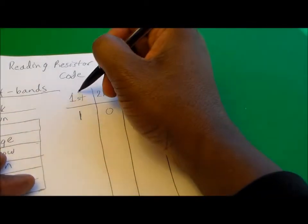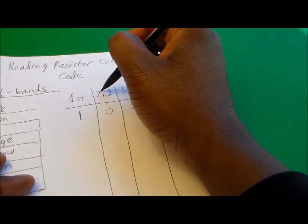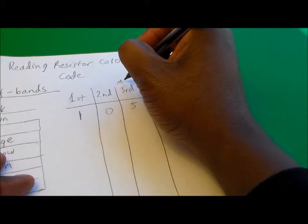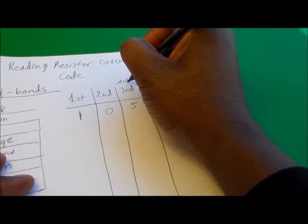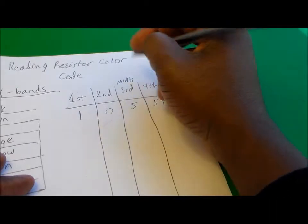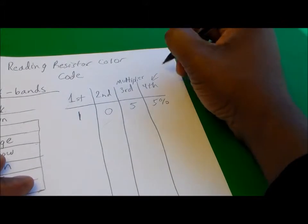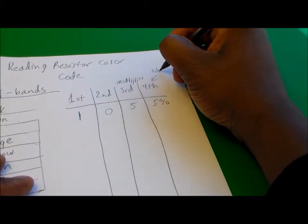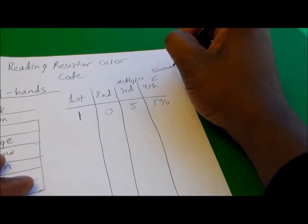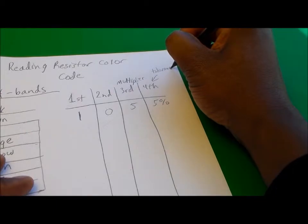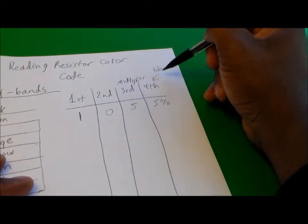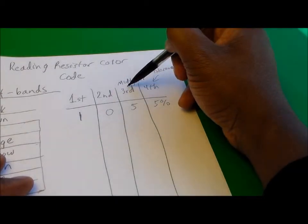Going back, you read the first band as is, the second band as is, the third band is called the multiplier band, and then the fourth band is what's called a tolerance band.